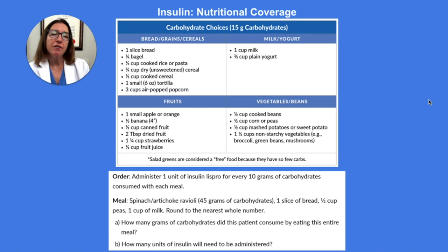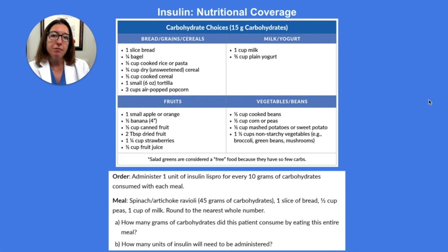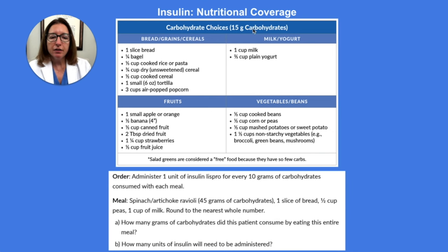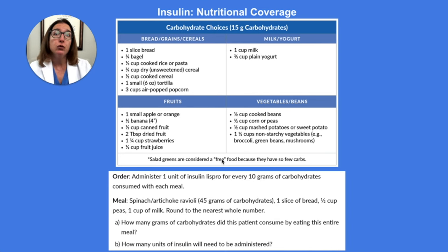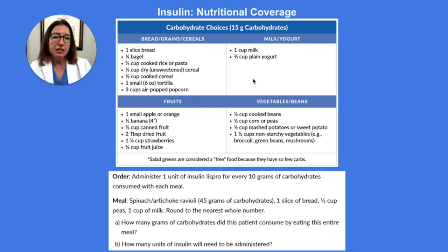With nutritional coverage, the amount of insulin your patient will receive is dependent on how many carbs they consumed with their meal and the prescribed insulin-to-carbohydrate ratio. In this table, all of the food items listed are approximately equal to 15 grams of carbohydrates. Salad greens are considered a free food because they have so few carbs. One slice of bread, one cup of milk — each is approximately 15 grams of carbs, and that is the same for all of these items.